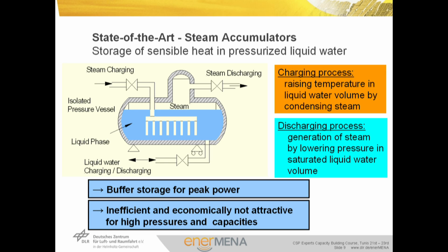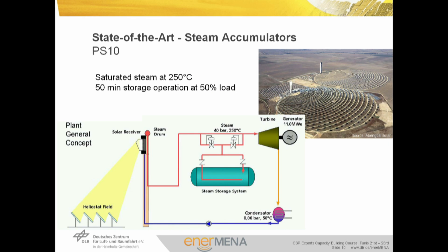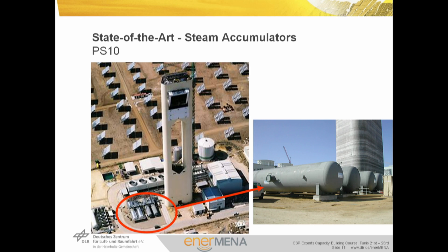The energy needed to generate saturated steam is taken from the sensible heat of the liquid volume. Pressure and temperature of the saturated steam provided during discharge is lowered. Steam accumulators are preferred as buffer storage for short-period power. Capacity-specific costs are dominated by the expense for pressure vessels and increase significantly at higher temperatures. An exemplary application is the PS10 and PS20 power plants, which use saturated steam from a central receiver, operating power blocks for about 50 minutes at 50% power. The main components are four pressure tanks filled with liquid water.